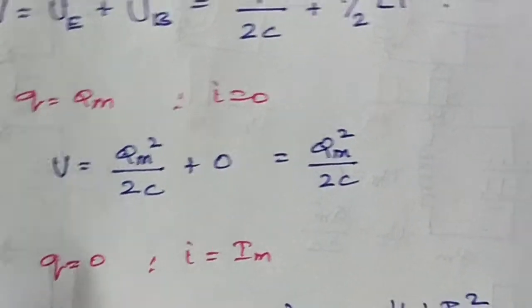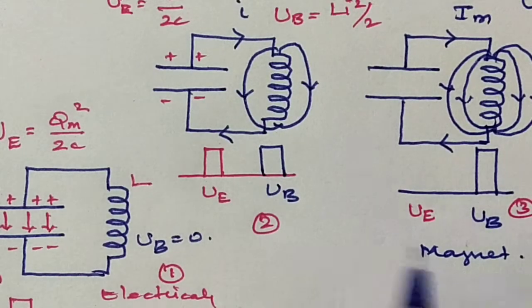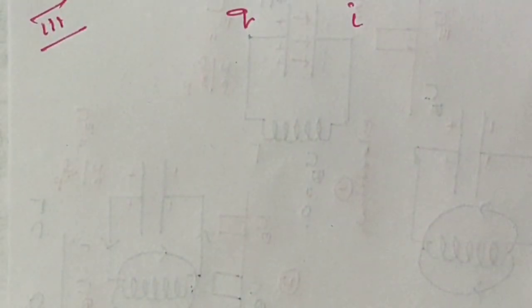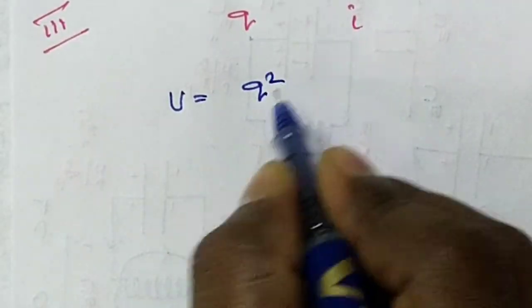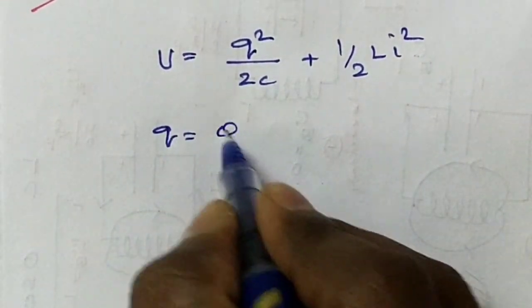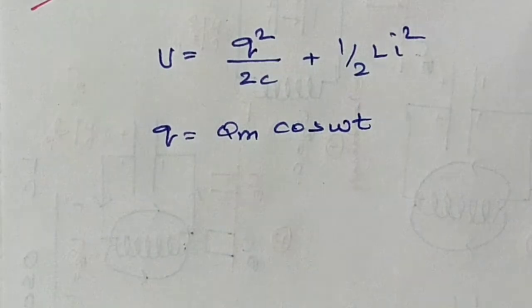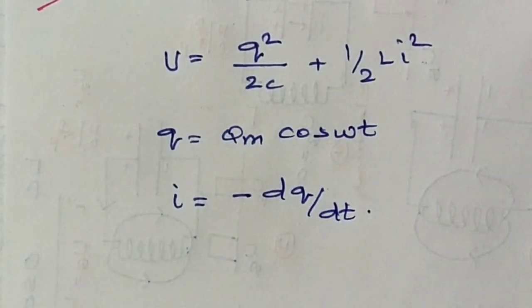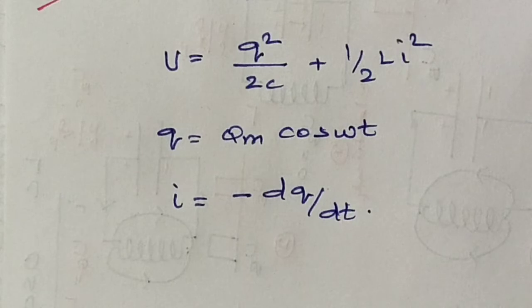Moving to the third case: both electrical and magnetic energy are present. There is charge Q on the capacitor and current I flowing in the inductor. The total energy is Q squared by 2C plus one-half L I squared. We know Q equals Q_M cosine omega T, and I equals minus DQ by DT, where the negative sign indicates that the charge on the capacitor decreases with time.